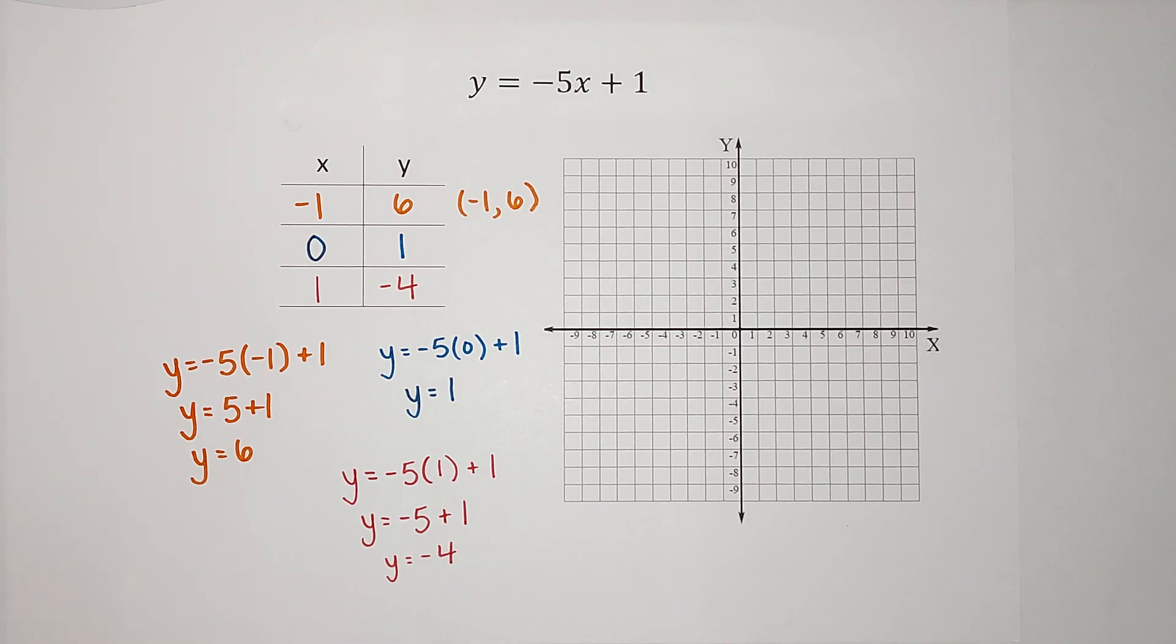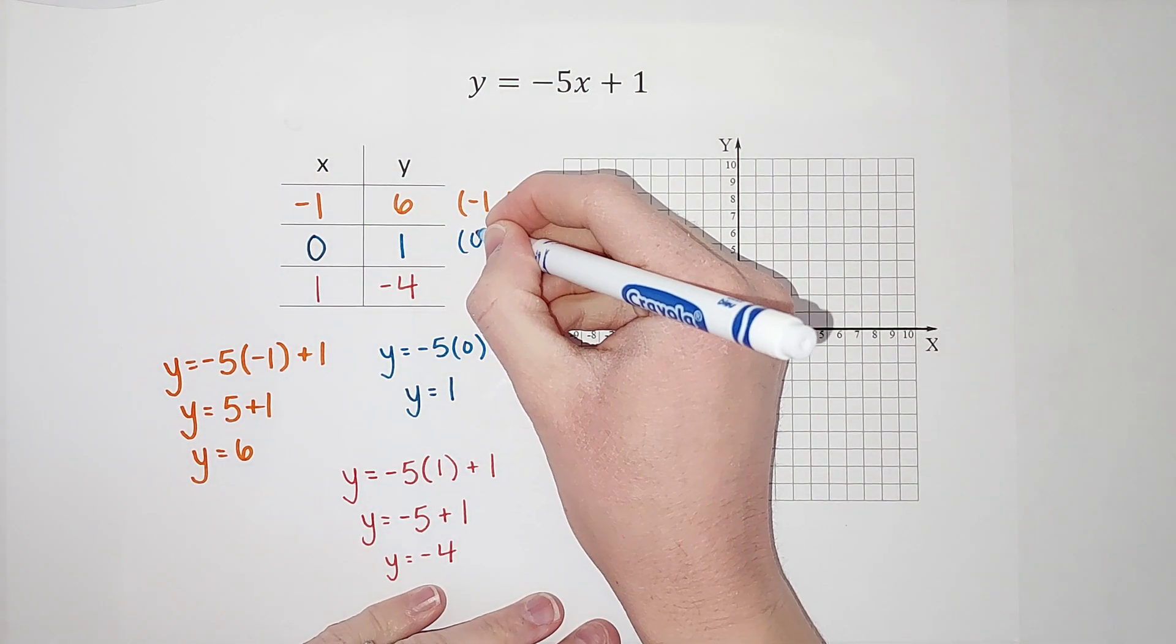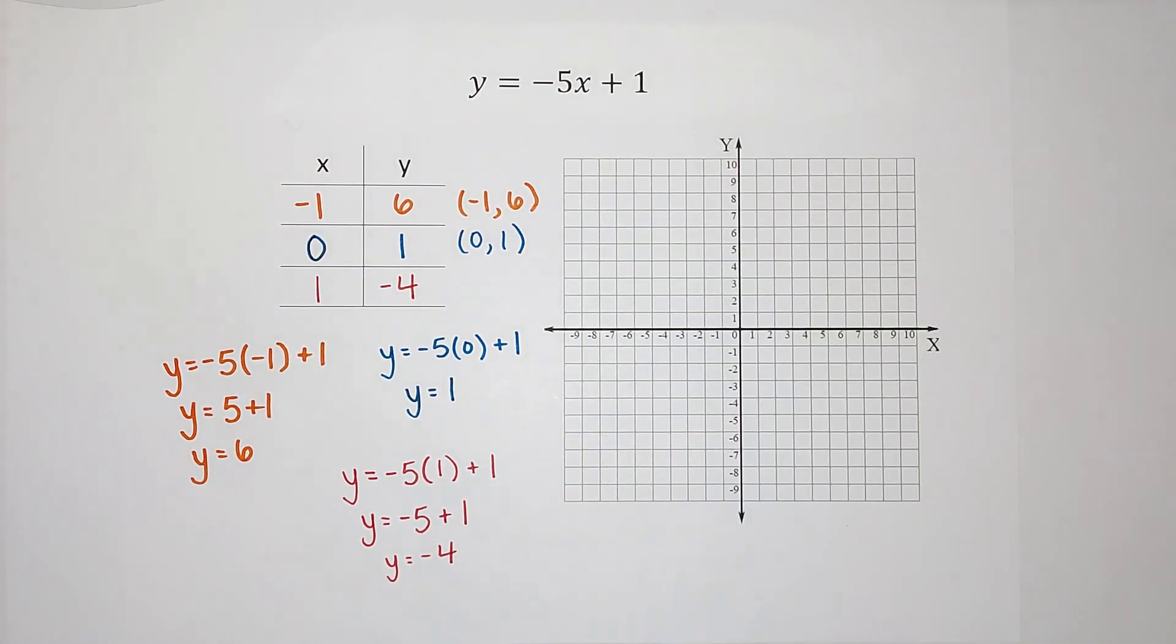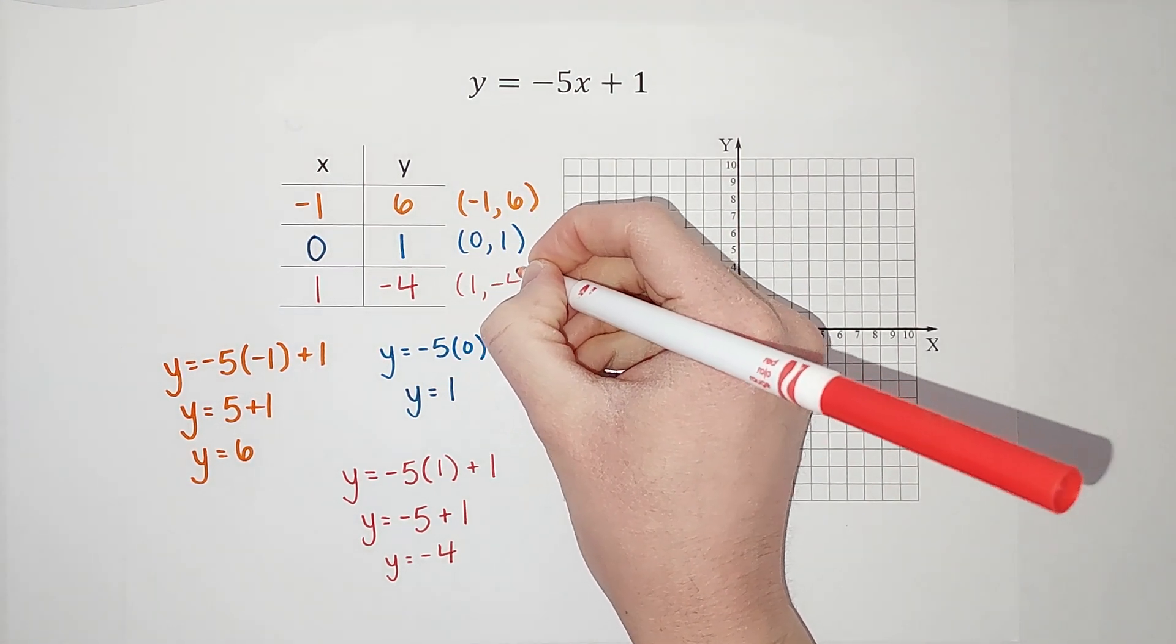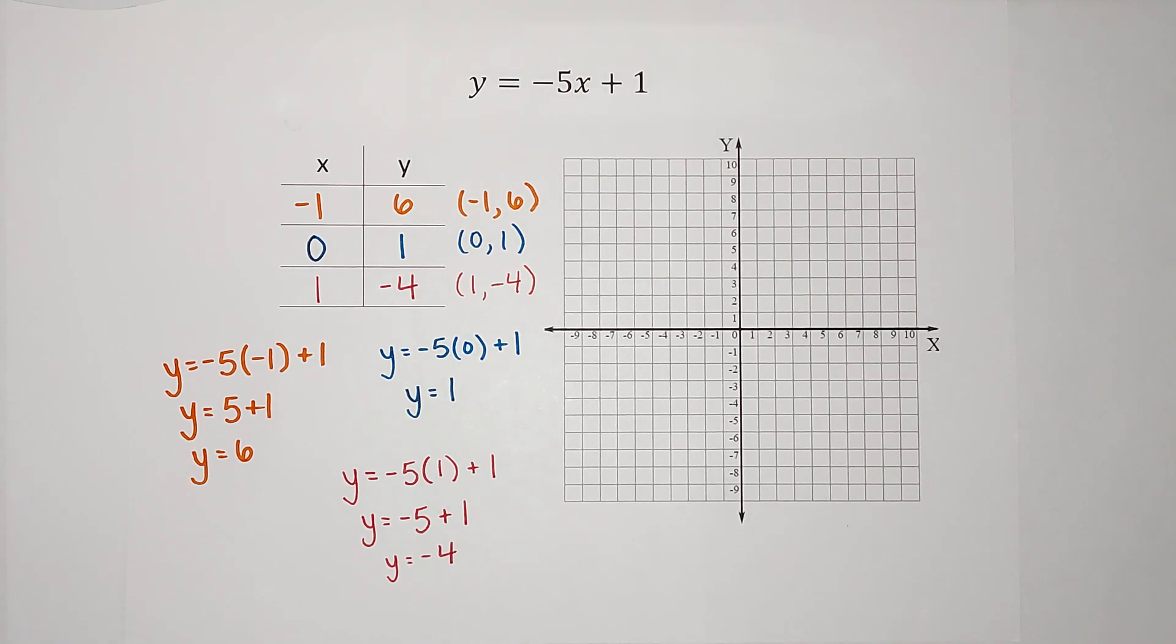Just like the other one, I could write this as an ordered pair if that is helpful. And then we are going to graph this. So we have three points.